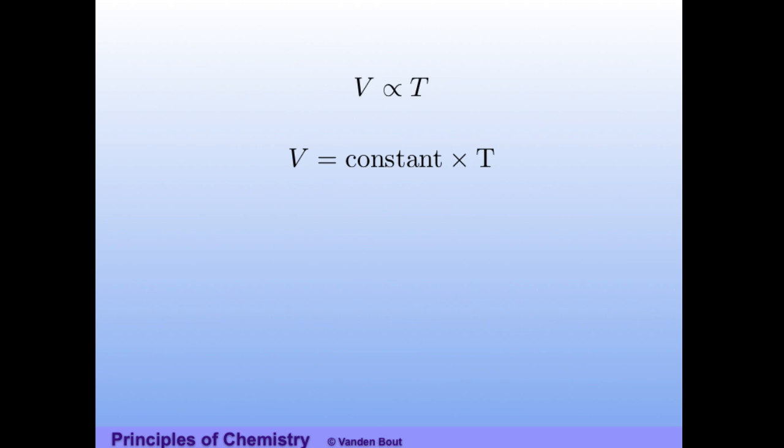So what Charles found was that at conditions around typical atmospheric conditions, say 1 atmosphere, volumes of most gases are proportional to the temperature. So this little symbol here means proportional to. And remember that proportional simply means that the volume is equal to some constant times the temperature.